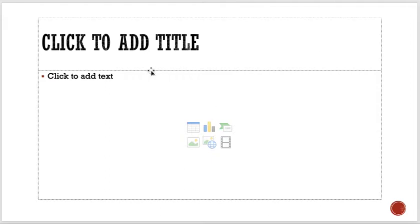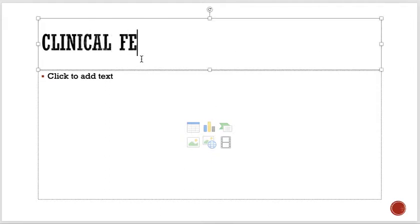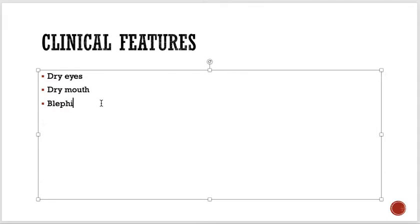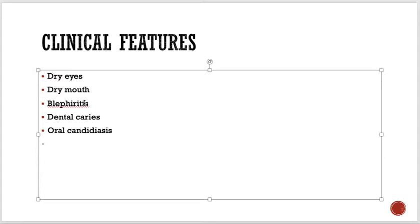Clinical features include dry eyes and dry mouth, inflammation and blepharitis. Being more prone to infections, they also have dental caries and oral candidiasis. All these arise because there are no secretions. The inflammation of the angle of the mouth is called angular cheilitis.